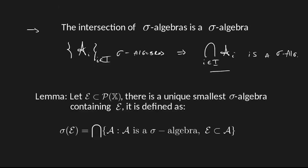This is a definition slash lemma because what it says is that whenever we grab a subset of parts of X, so E is gonna be a set formed by many sets from X, then there exists a unique smallest sigma algebra containing E. And smallest I'll explain this in a bit. And this smallest sigma algebra is defined like this: it is the intersection of all the sigma algebras that contain this set E.